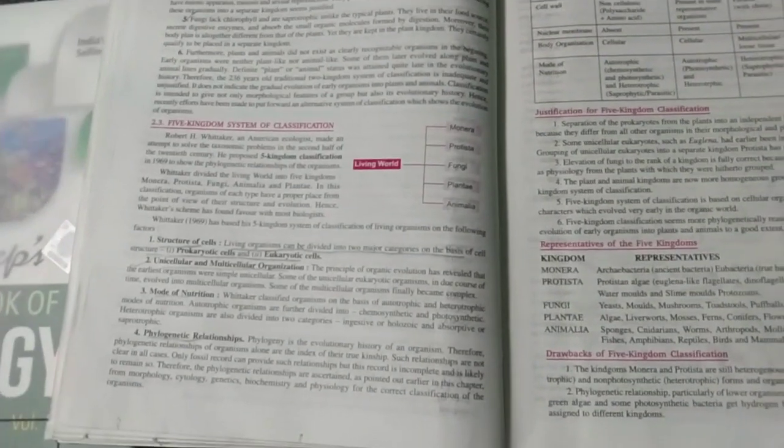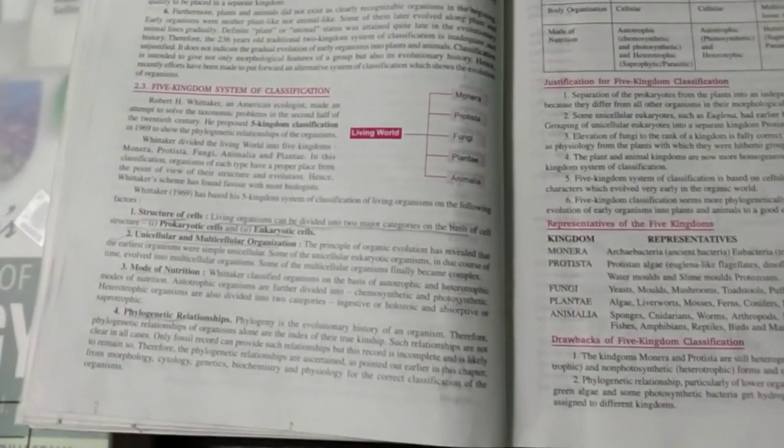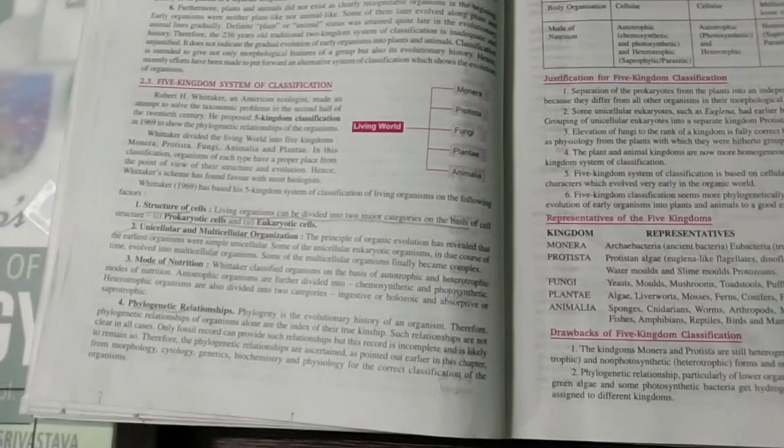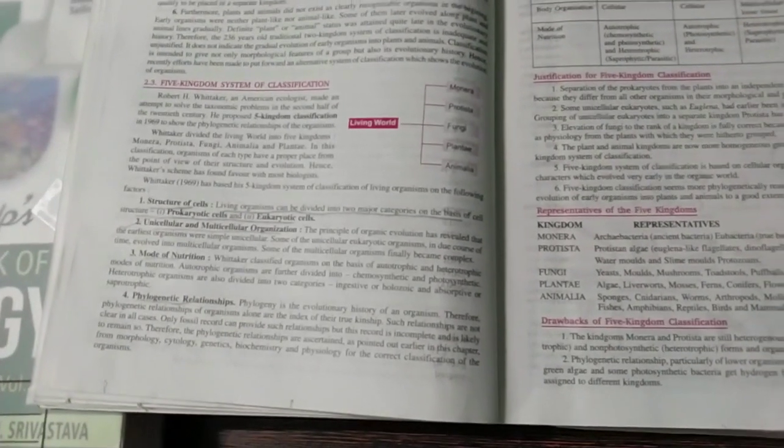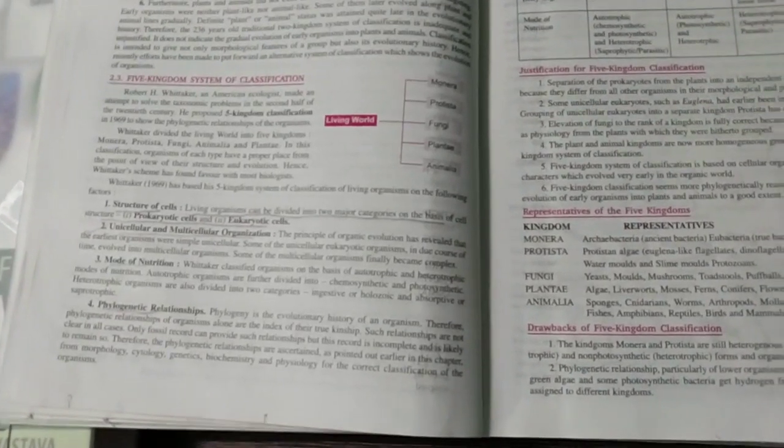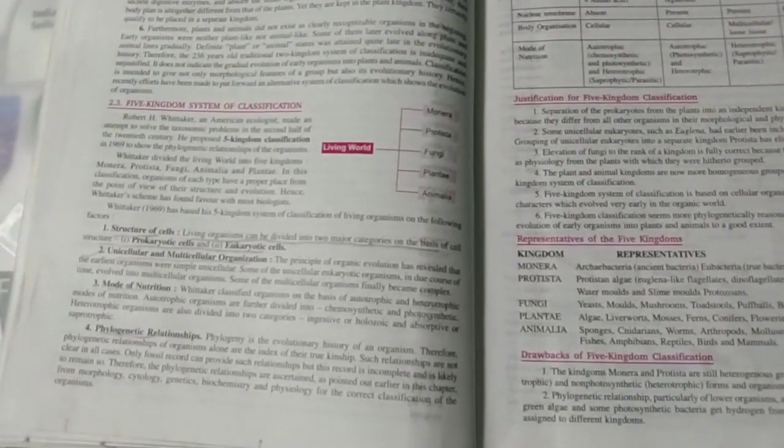Okay, next page. This is five kingdom system of classification. It's all given on what basis R.H. Whittaker divided five kingdom system of classification. Structure of cells, mode of nutrition, phylogenetic relationship.